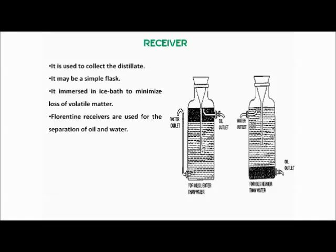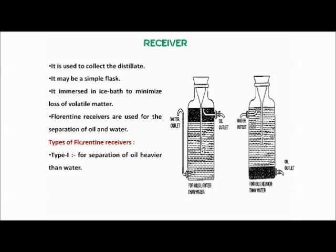Florentine receivers are used for the separation of oil and water. There are two types: Type 1 is used for separation of oil heavier than water — the oil settles at the bottom and is drawn out through an outlet, while water remains above. Type 2 is used for separation of oil lighter than water — here the oil outlet is at the top and the water outlet is at the bottom.